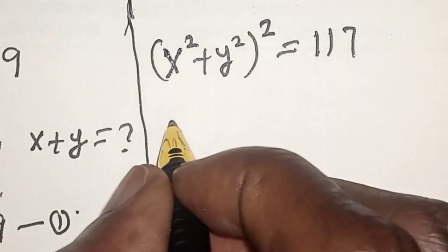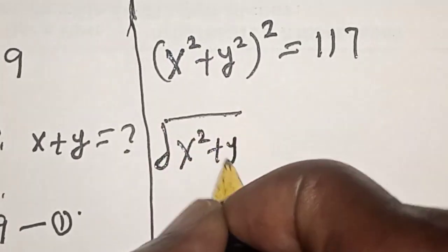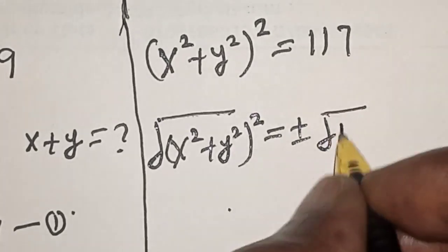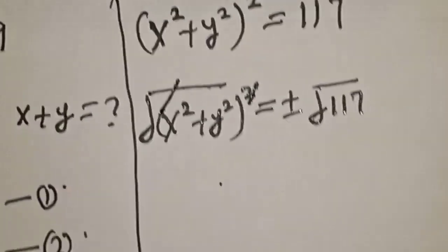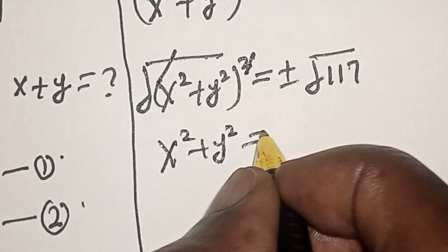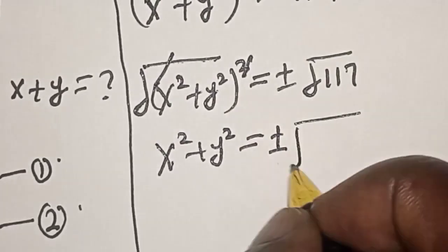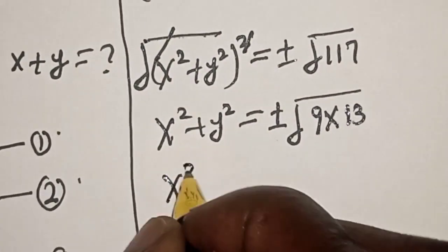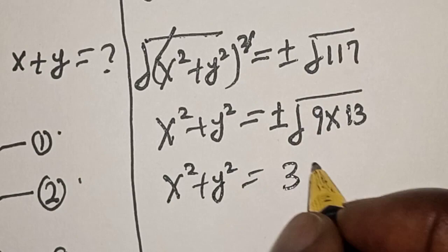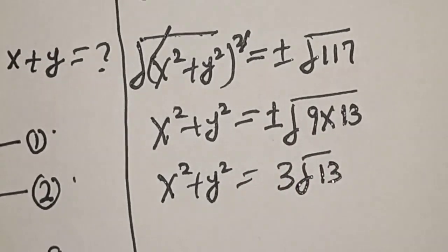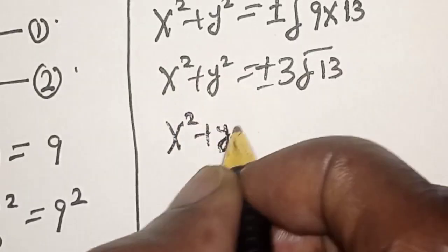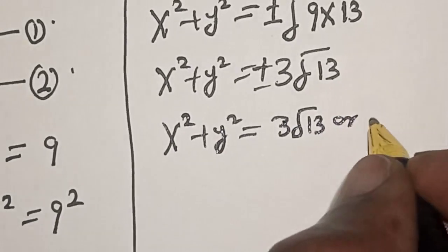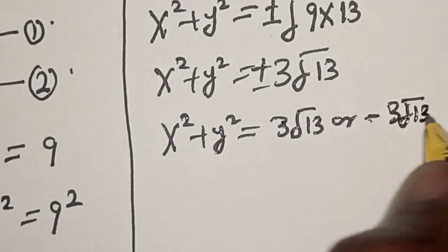Then let's take the square root: x squared plus y squared is equal to plus or minus the square root of 117. We simplify the square root of 117 as the square root of 9 multiplied by 13, which gives us x squared plus y squared is equal to plus or minus 3 root 13.